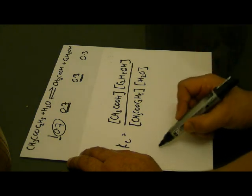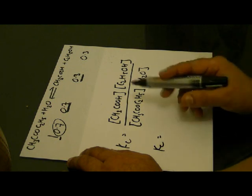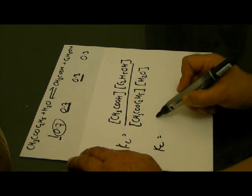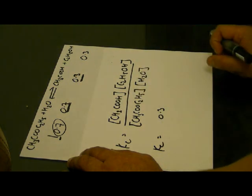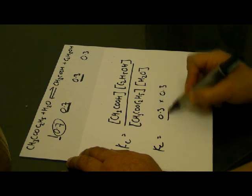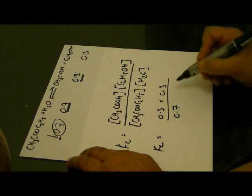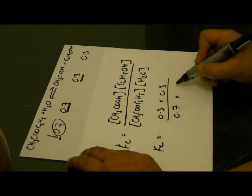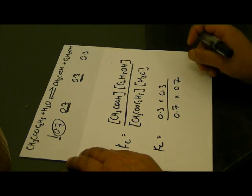So we'll end up with Kc equals 0.3, the concentration of ethanoic acid multiplied by the concentration of ethanol, 0.3, divided by the concentration of ethyl ethanoate, 0.7, and water in moles as 0.7.